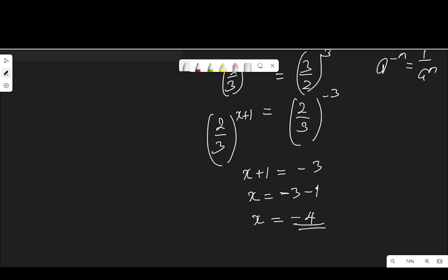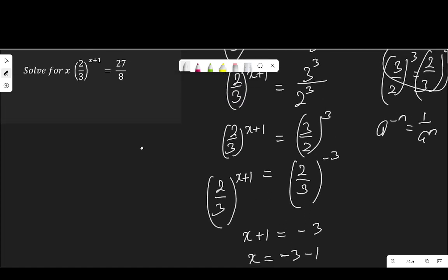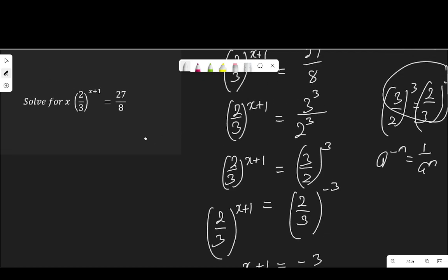So negative 4 is the value of x that satisfies this equation: 2 over 3 to the power of x plus 1 equal to 27 over 8.